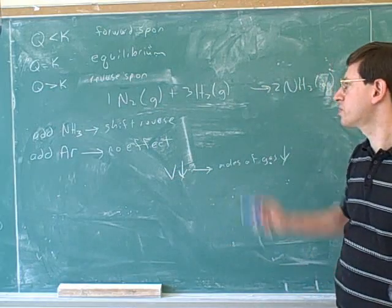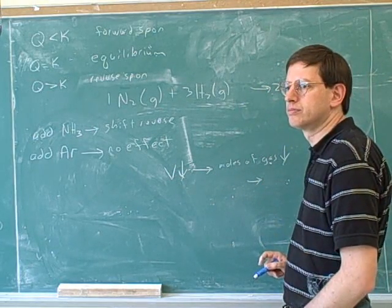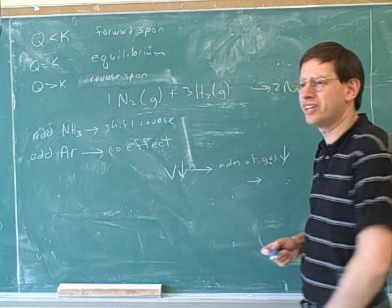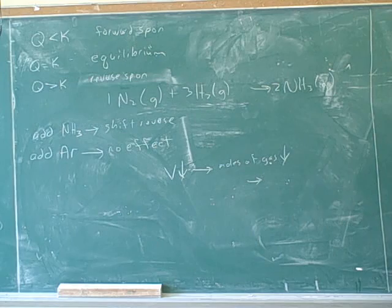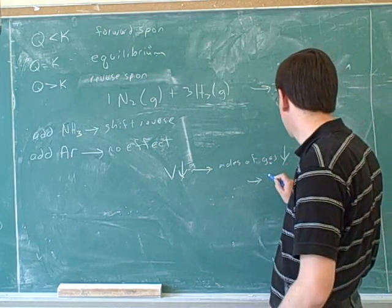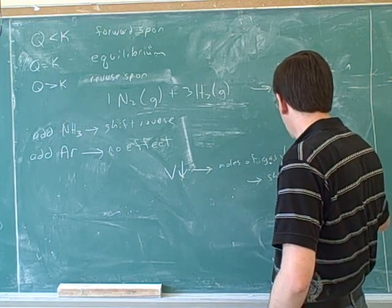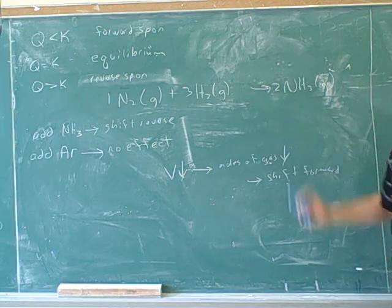Okay. So if we decrease the volume, which way would this reaction shift? The reverse. Forward. Which one? I'm sorry. If we decrease the volume, would this reaction shift forward or reverse? Oh, forward. Yeah, because that decreases the number of moles of gas. Another reaction might shift reverse, but this one wants to shift forward to reduce the number of moles.